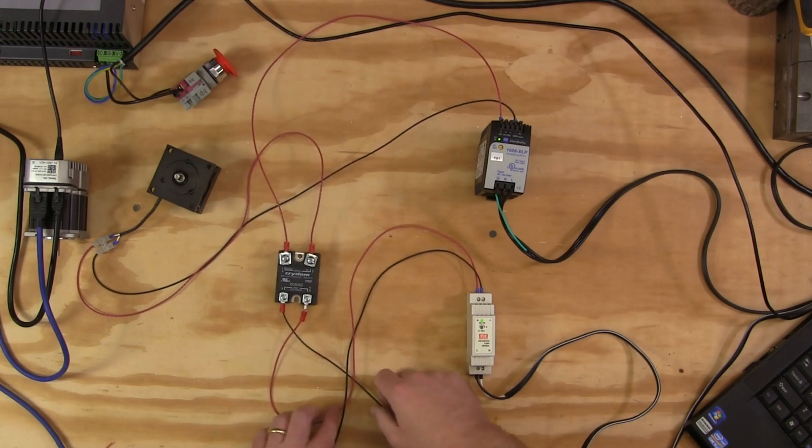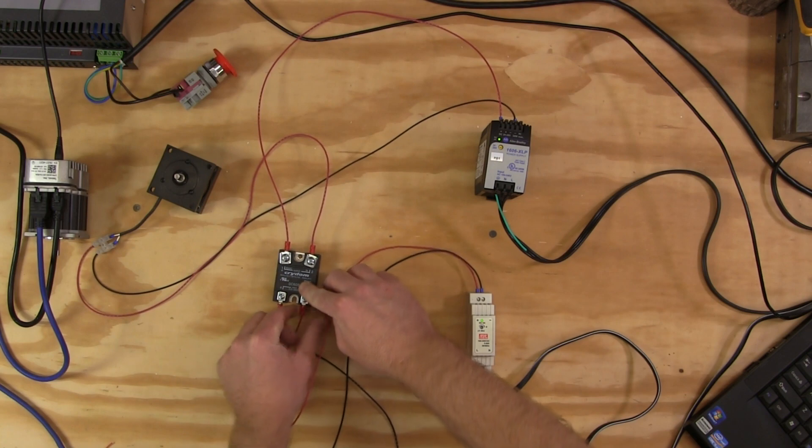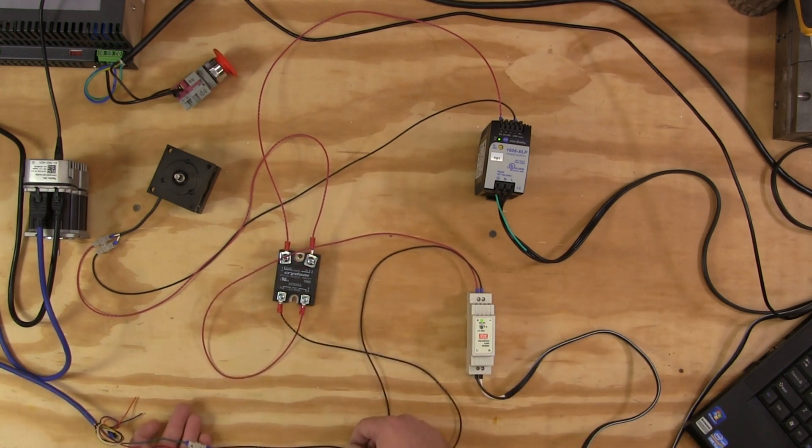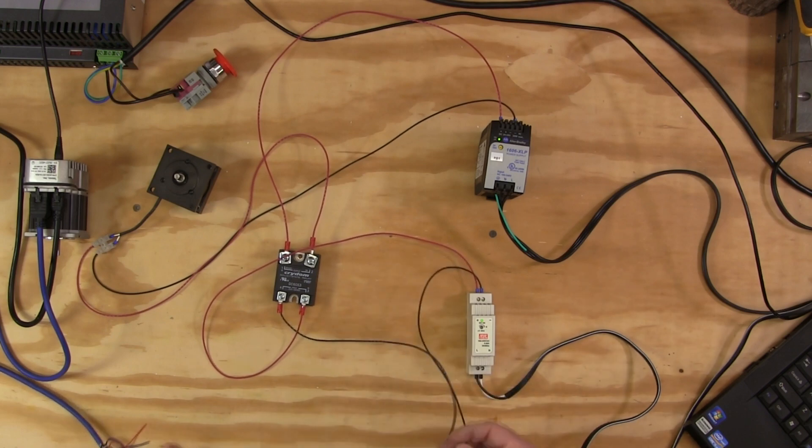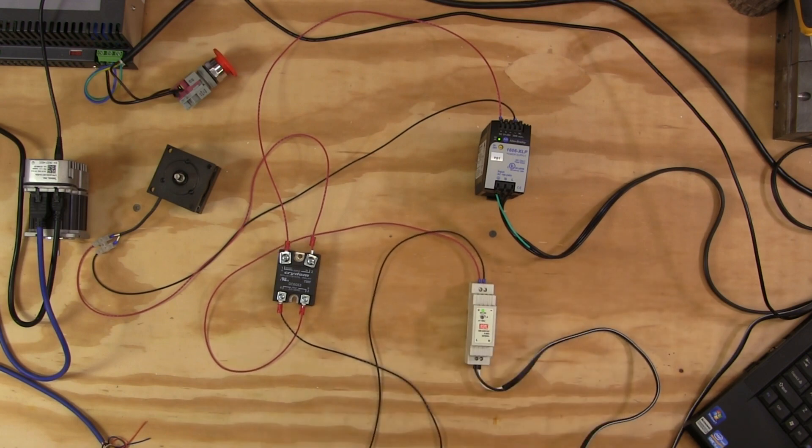That goes to the green wire on the input output cable from the ClearPath servo motor. The other side of that is the red wire and that red wire feeds straight back to negative 5 volts on the DC power supply.